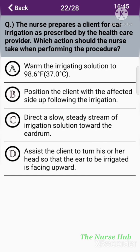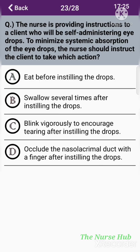The twenty-second question: The nurse prepares the client for ear irrigation as prescribed by the healthcare provider. Which action should the nurse take when performing the procedure? Option A: Warm irrigating solution to 98.6°F. Option B: Position the client with the affected side up following irrigation. Option C: Direct a slow, steady stream of irrigation solution toward the eardrum. Option D: Assist the client to turn his or her head so the ear to be irrigated is facing upward. The correct answer is option A: Warm the irrigating solution to 98.6°F.